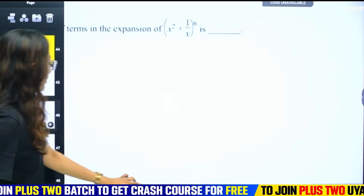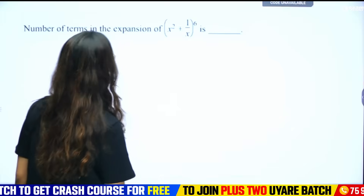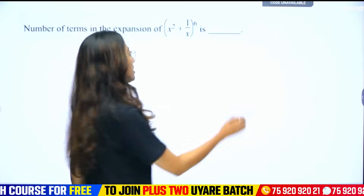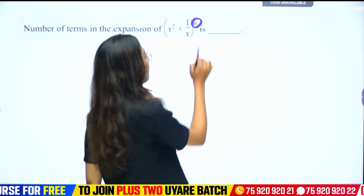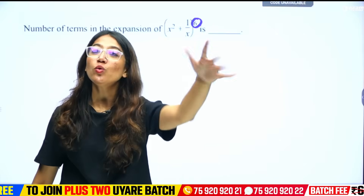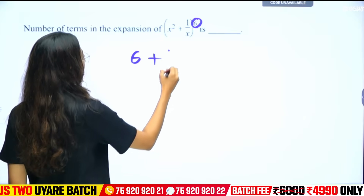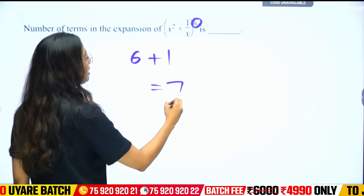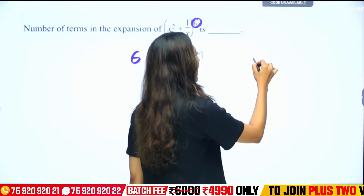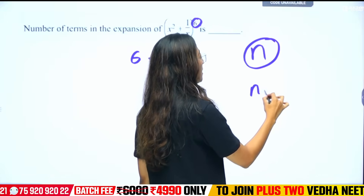The first question is: number of terms. I'm going to ask the number of terms in one expansion. The power is 6, so the number of terms is 7. In general, the power is n, so there are n plus 1 terms.